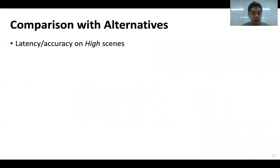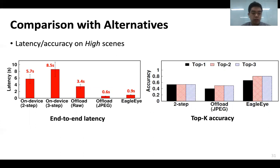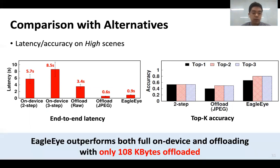Lastly, we compare latency and accuracy on high-crowdedness scenes against full on-device and full offloading solutions. EagleEye achieves lower latency than running everything on-device and lower than fully offloading the image in RAW format. Full offloading using JPEG compression results in slightly lower latency; however, JPEG compression incurs accuracy loss due to image distortion, diminishing the gain from ICN. Notably, EagleEye only uploads large profile or small faces, incurring only 108 kilobytes of data on average per scene, which is very favorable for outdoor scenarios with relatively low network bandwidth.